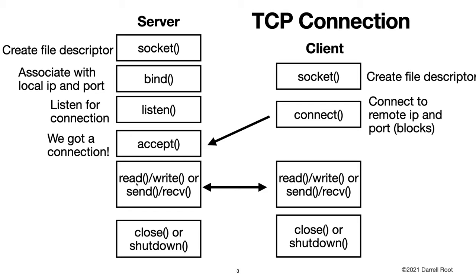Reading and writing data is usually used for text files on a local system, but you can also read and write to a network file descriptor. However, send and receive are designed for network connections. Likewise, you can close the file descriptor, but shutdown is designed for the network connection and is a little bit more graceful.